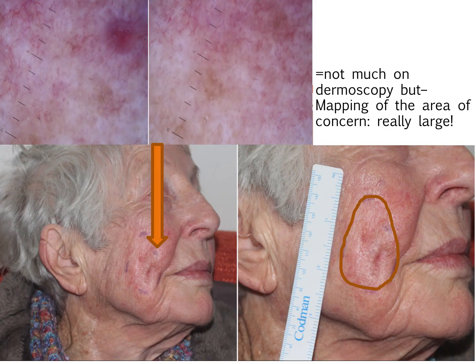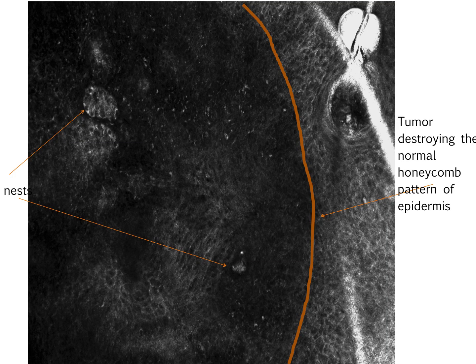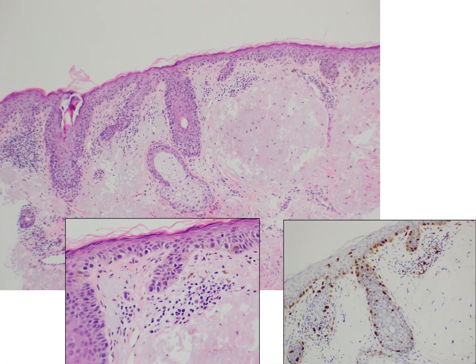Another example: this patient had a pigmentation with really not much visible on dermoscopy, yet we mapped a very large area of concern. Confocal microscopy is great for amelanotic lesions because melanin still backscatters quite a lot of light. We can see nests of atypical cells. Often the normal honeycomb pattern is replaced by an edematous structure that is not very bright, but you see atypical cells or nests scattered there, telling you where the margins are. On pathology with immunostaining, there was quite a florid reaction.